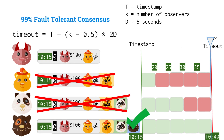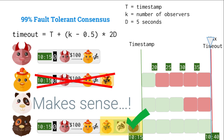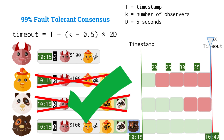This means that even at the max timeout, Bob will still accept that transaction. Why? Bob will know that everyone has seen the message, which is exactly the property we're trying to provide. What we're trying to do is make sure that everyone has seen every transaction.